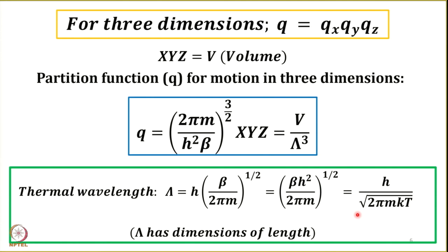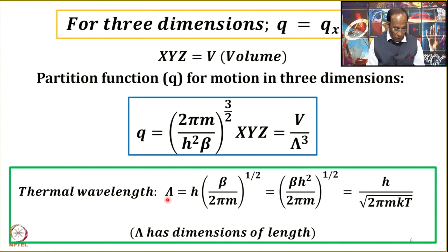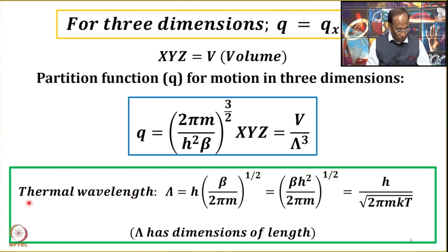In this expression, h is Planck's constant, m is the mass of one particle, k is the Boltzmann constant, and T is the temperature in Kelvin. Once you put in all the units, you will see that the dimensions of λ turn out to be those of a length. Therefore, λ is given a special name: the thermal wavelength. Refer back to your quantum chemistry concepts where you discussed wavelength.